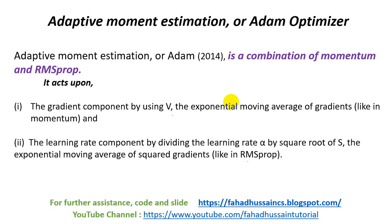The exponential moving average of the squared gradient, like in RMS Prop — within RMS Prop we consider S and the alpha value in this way. Additionally, the gradient component V is also available here, which comes from the momentum concept.